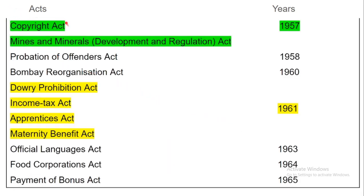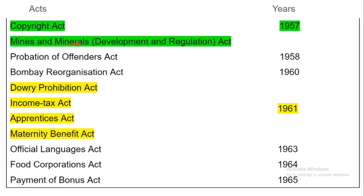Copyright Act and Mines and Minerals Development and Regulation Act — these two acts passed in the same year, 1957.